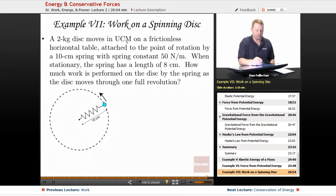A 2 kilogram disk moves in uniform circular motion on a frictionless horizontal table attached to the point of rotation by a 10 centimeter spring with a spring constant of 50 newtons per meter.